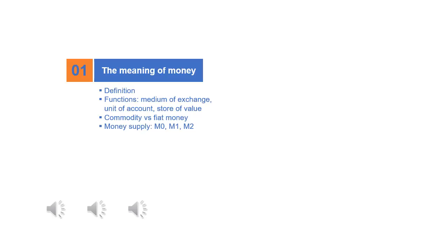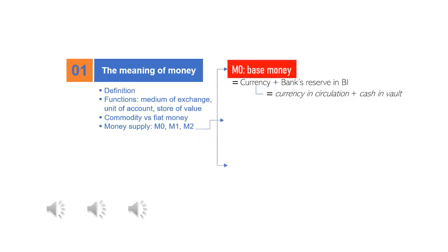Regarding commodity and fiat money, the former uses a commodity as money — this money has intrinsic value — while the latter uses other things such as paper or coins whose intrinsic value is low or almost none.